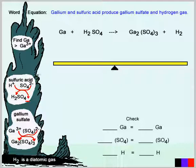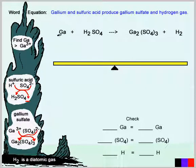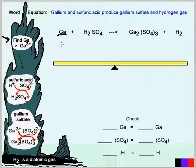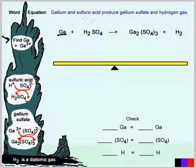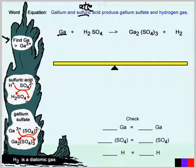Our problem is to make a balanced equation from the word equation: gallium and sulfuric acid produce gallium sulfate and hydrogen gas. We use a periodic table to find gallium, and we see that gallium has a charge of 3+. We don't use the ion when we write down the metal — we just write down its atom as gallium. For sulfuric acid, the name ends in '-ic,' so we're looking for an '-ate' in the polyatomic chart.